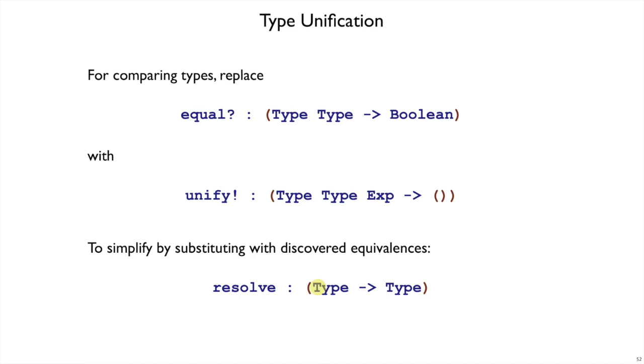Resolve takes a type, normally a type variable, or that's when resolve does something interesting. If it gets a type variable and that type variable has been assigned to another type, then resolve returns that other type, and it recurs so that it can look through chains of type assignments.